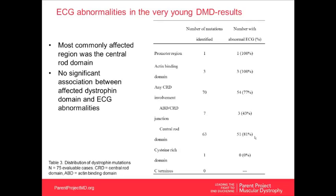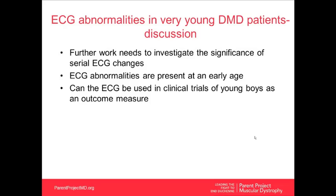We also looked for correlation between the dystrophin mutation location and EKG abnormalities. The most affected region was the central rod domain; however, we did not find an association between the affected dystrophin region and EKG abnormalities. Further work needs to be done, but EKG abnormalities are clearly present at an early age and may possibly serve as an outcome measure in future clinical trials.